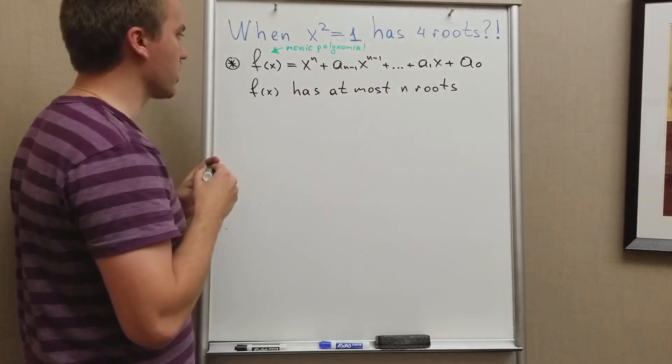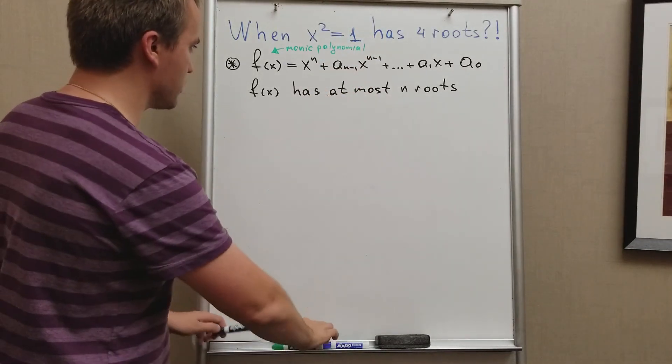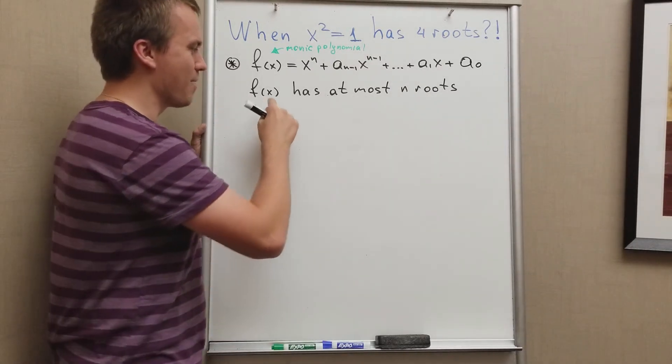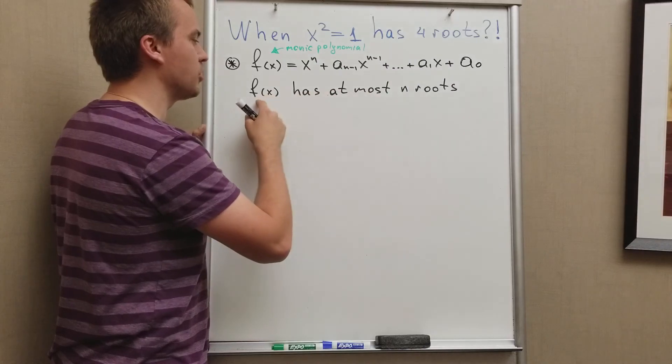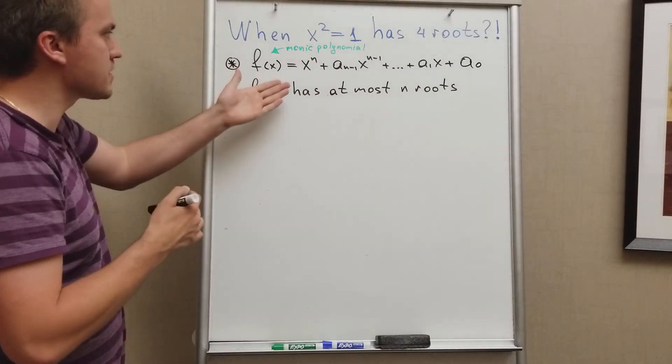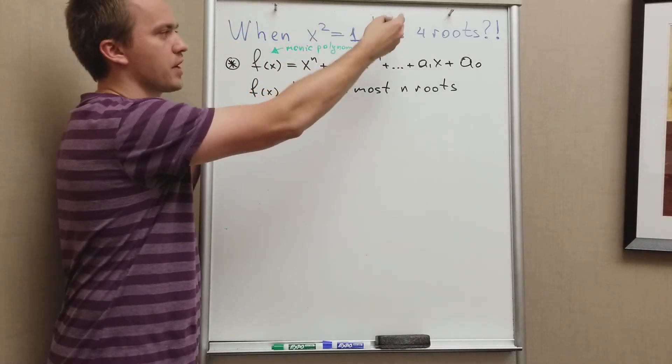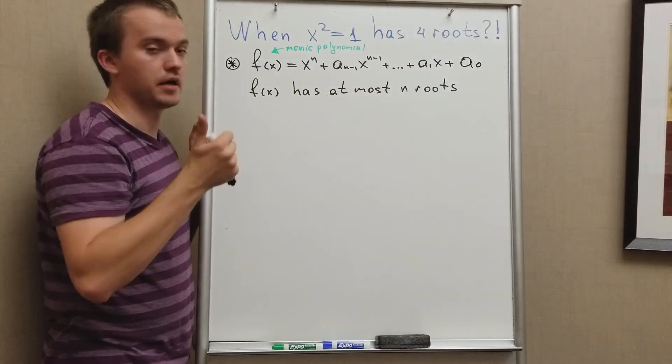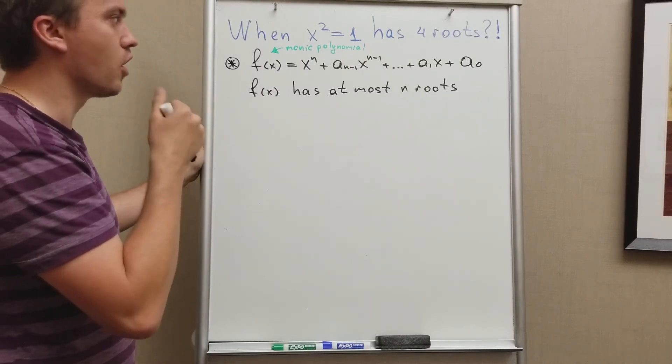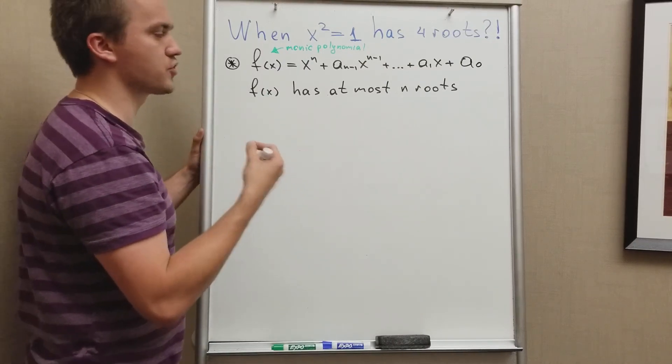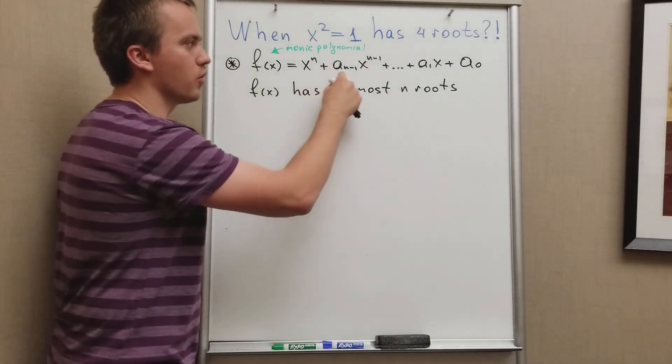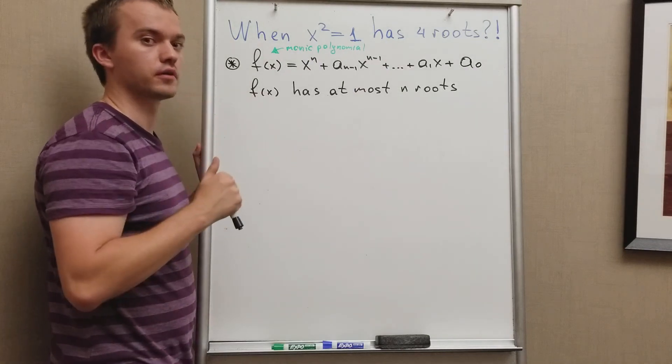And we know and can prove the theorem that this polynomial has at most n roots. And you're like okay, if you're going to use this fact, it's impossible that x squared equals one has four roots. But it's really important to specify over which algebraic structure we are working on, because this statement is true if our coefficients are elements of a field.